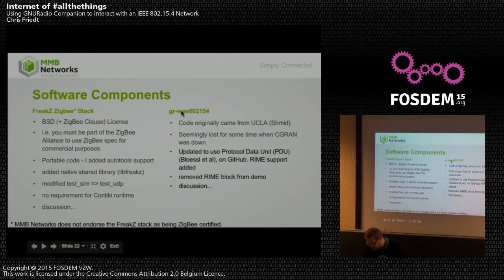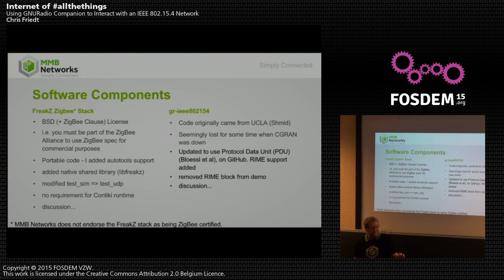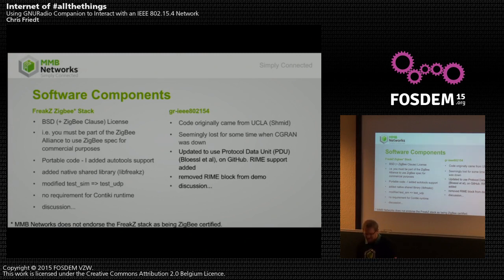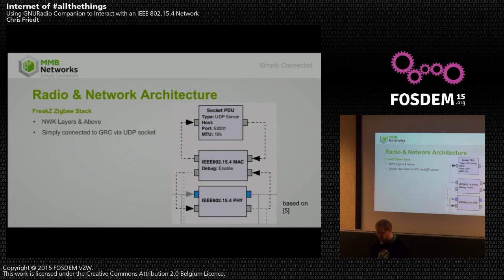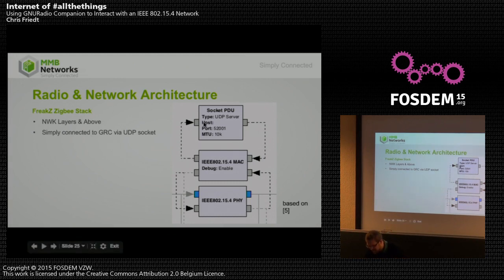This is essentially the RIME transceiver minus the RIME block. I circumvented the network layer and went straight to PDU sockets. This is the receiver. I'll jump out to FreakZ — if you've worked with Zigbee, you'll find a typical test app with stubs to fill in. I improved the interface a bit. It's pretty straightforward to use the command structure to send out messages.